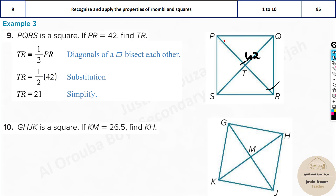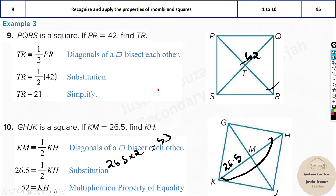Square GHJK: KM is given as 26.5; find KH. KM is half the diagonal, so KH = 26.5 × 2 = 53. Note there is an error in the answer shown — since 26.5 times 2 gives 53, not 52. The correct answer is 53.